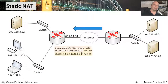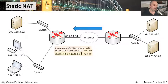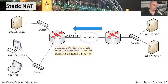A static NAT is when traffic is going the other direction. There may be devices out on the internet that need to communicate to servers inside our network — we might have a web server and an email server. We need to configure our firewall or router so that if anybody is communicating inbound to 66.20.1.14 as the destination, and they're running port 80, I want to change the destination IP address to 192.168.3.22, because port 80 traffic means they need to go to our web server. The translation table ensures that when the web server sends information back out, it re-NATs that traffic to the 66.20.1.14 address.